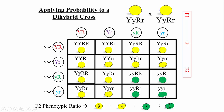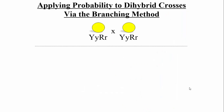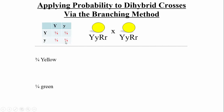Rather than the full Punnett square, we can use the branching method, which is simpler. Invoking Mendel's principle of independent assortment, we treat each gene separately. First, crossing Yy × Yy: three-quarters of offspring are yellow, one-quarter are green. Then, crossing Rr × Rr: three-quarters are round, one-quarter are wrinkled. We're done with each gene individually.